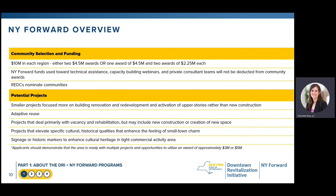Similar to the DRI, potential projects should primarily focus on addressing vacancy and rehabilitation of existing structures, including renovation, redevelopment, and adaptive reuse of existing buildings. Some new construction or creation of new spaces may also be included. Because of the emphasis on leveraging and protecting the small-town charm of New York Forward communities, projects should focus on elevating artistic, cultural, architectural, and historical qualities. Signage, historic markers, and wayfinding elements are also desirable. Applicants should demonstrate that the area is ready with multiple projects identified and is prepared to utilize an award between $3 and $5 million.